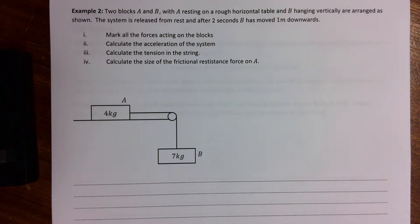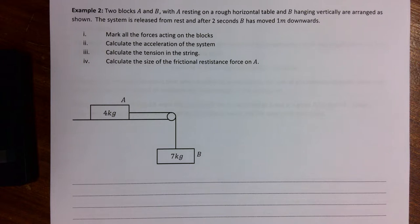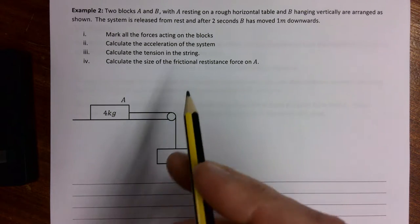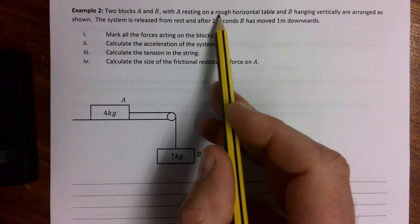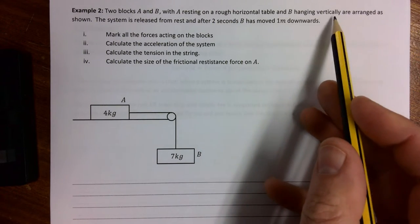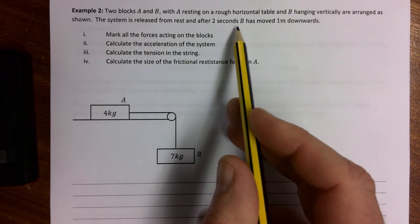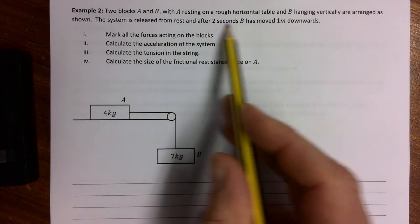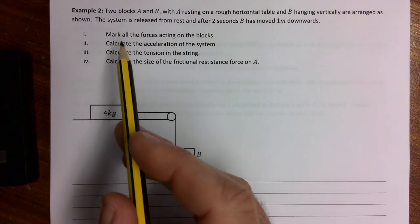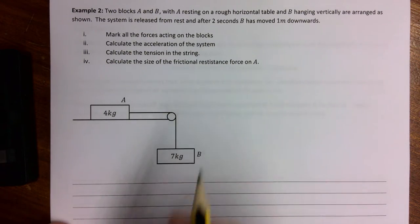This is GCSE further math mechanics, unit 4 on connected particles. This is our final example, one of the harder pulley problems because it's over a table. I suspect it's beyond the scope of the course, however it's still good to take a look and see how these ones work. Two blocks A and B with A resting on a rough horizontal table and B hanging vertically are arranged as shown. The system is released from rest and after 2 seconds B has moved 1 meter downward. That's suggesting to me we're going to use u, v, a, s, t at some stage.